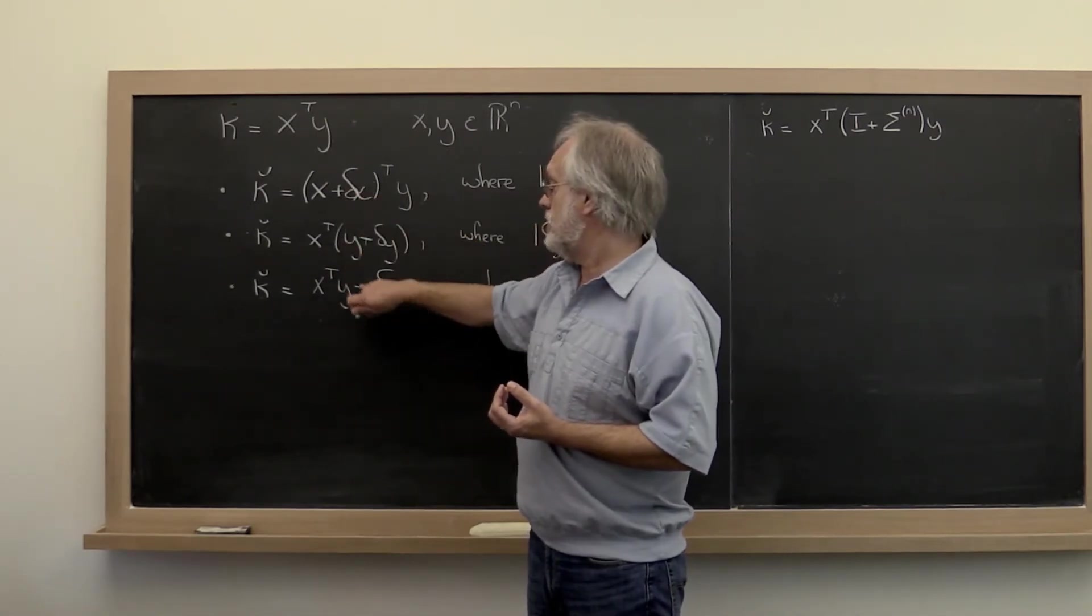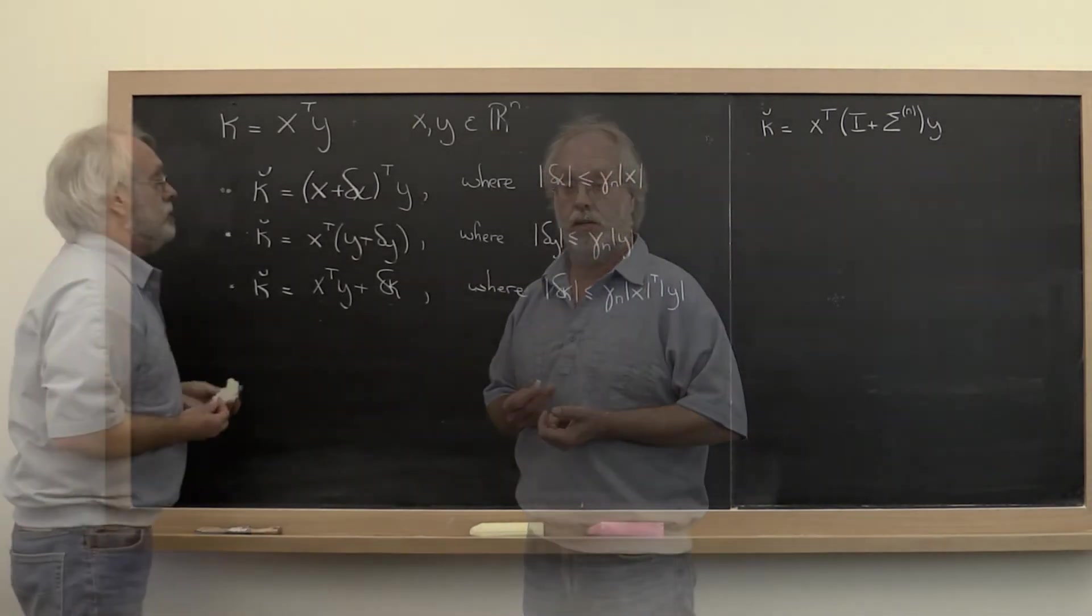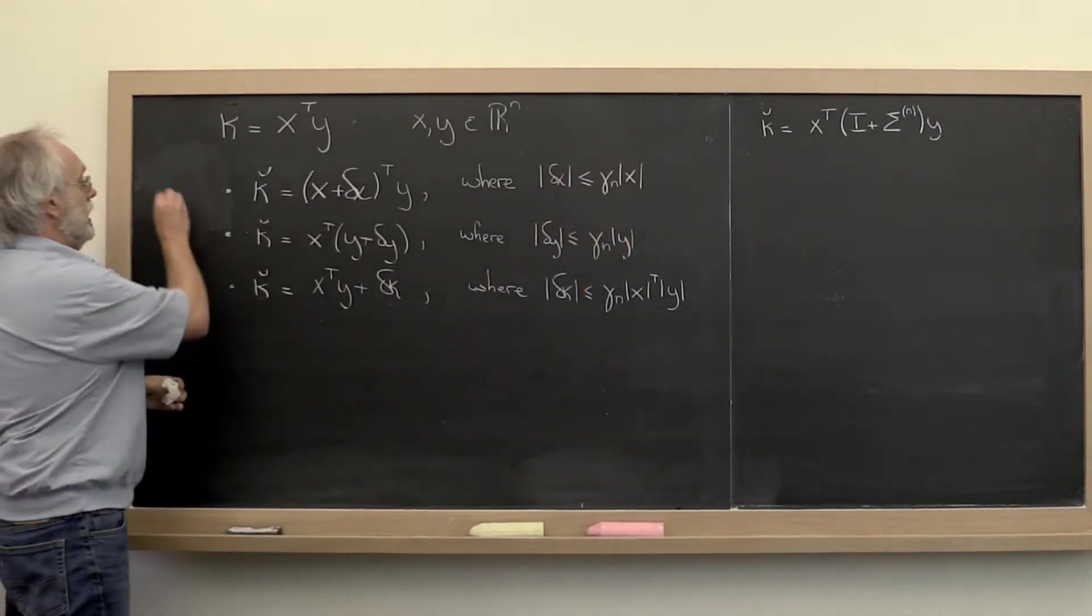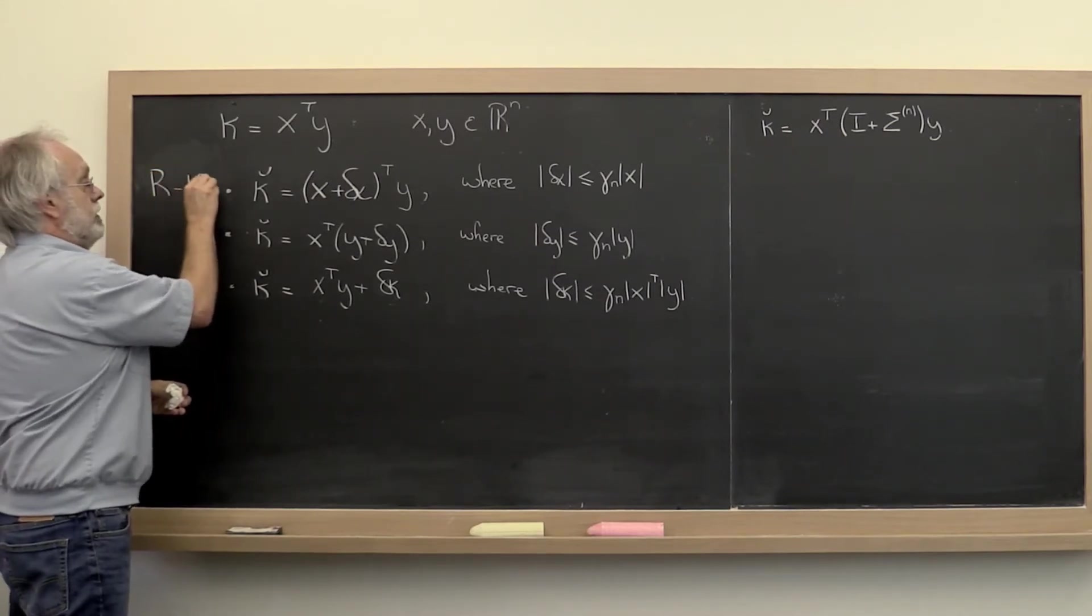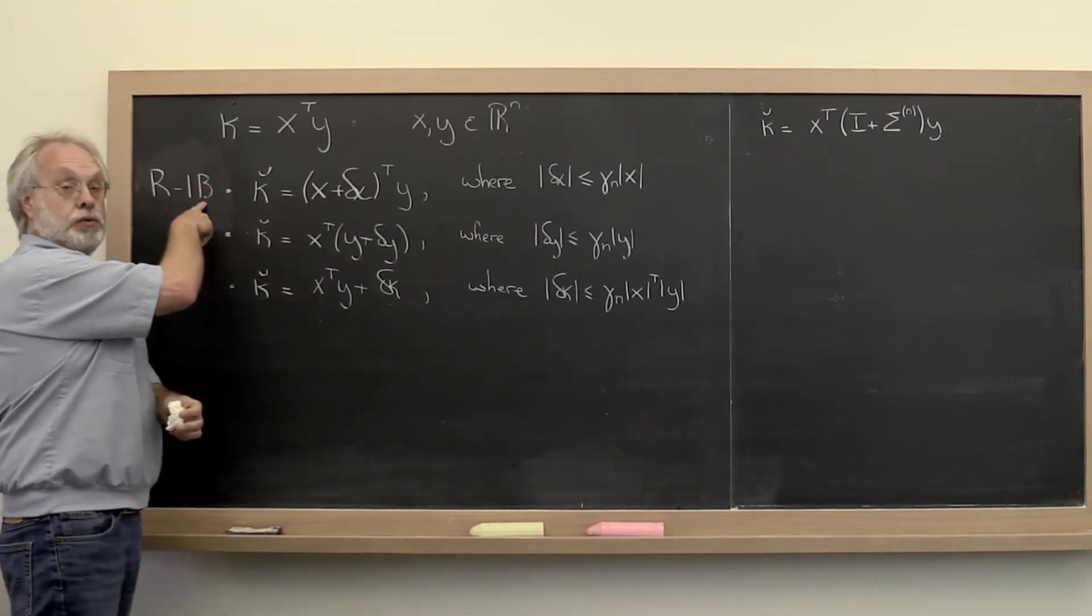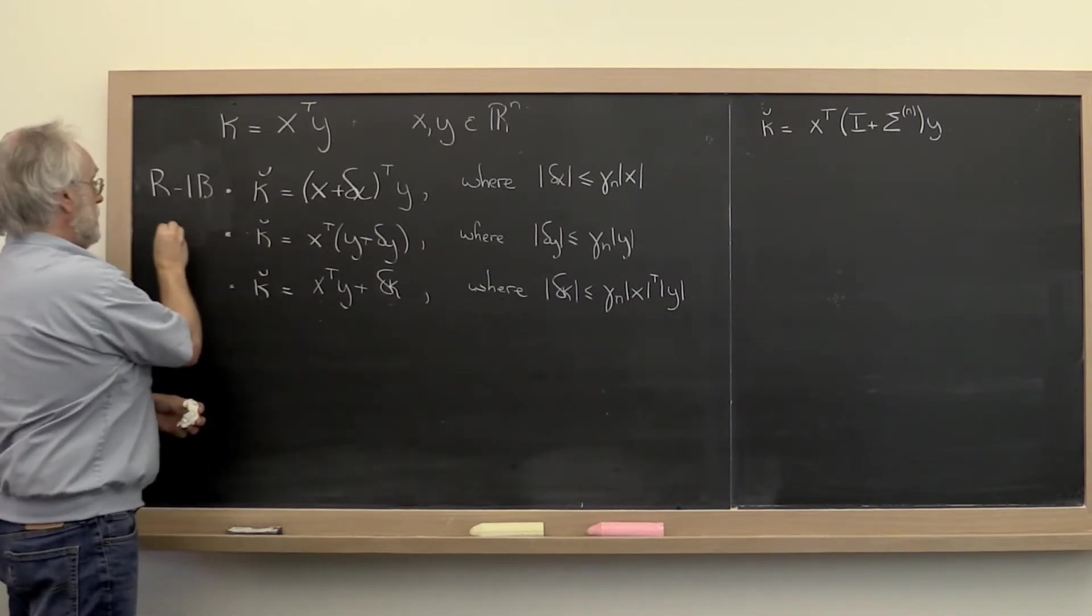And each of these results ends up being useful in a different situation. Now this first result we're going to label as result 1B. The B stands for backward error result. And this is result number one. This is result number two.